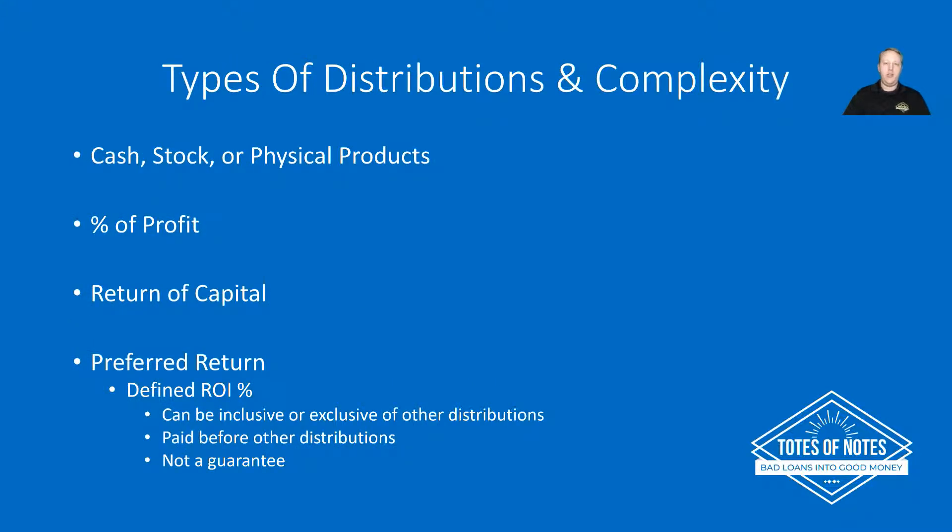Types of distributions and complexity. This can get very convoluted and complex. Distributions are usually going to be in the form of cash, shares, or physical products, and those are going to go to the shareholders, managers, owners, whatever term's appropriate for the type of business you have. Usually it's in the form of cash, and a lot of times to keep it very simple it's going to be a percentage of the profit. So a very basic partnership where there's only two of them doing the work evenly and they both brought the same amount of money, they'll probably do a 50-50 type of profit split.